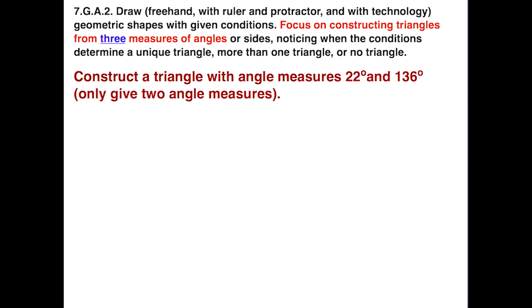Now the standard talks about constructing triangles from three measures of angles. But we can throw the students a little bit of a curve. What if we ask them to construct a triangle with angle measures 22 and 136? We've only given them two angle measures. Well, let's see what happens.